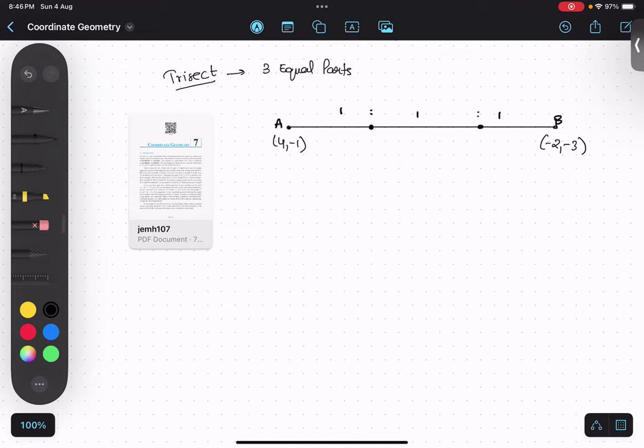Let me label this. This point is A, this point is P, this point is Q. They are asking us to find the coordinate of P and the coordinate of Q. That is the question. Now one part I am going to do, second part you guys will do. I'm going to take point A and point P.